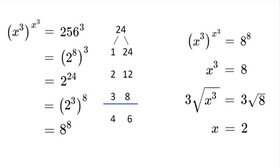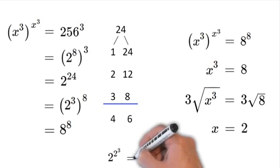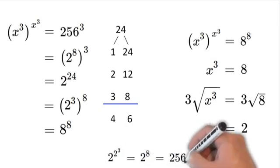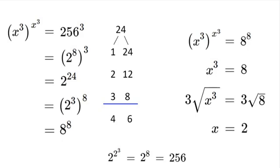And we can test this by plugging 2 into the equation. So we have 2 to the power of 2 to the power of 3 is equal to 2 to the power of 8, which is equal to 256.